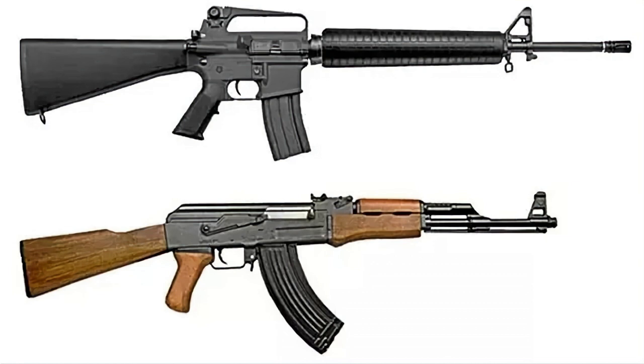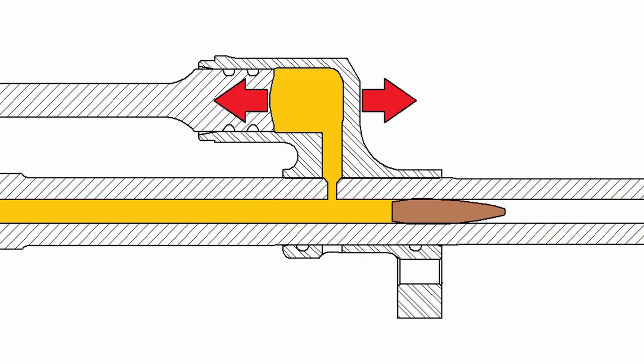Understanding these differences helps in grasping the unique dynamics of each rifle's barrel vibration. Each design has its specific way of channeling and utilizing gas pressure within the rifle. As we explore these aspects, it becomes clear how structural variations influence the firearm's performance. Continuing this exploration, we'll go deeper into the mechanical nuances of these iconic rifles.